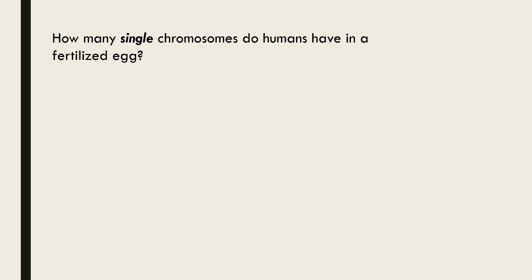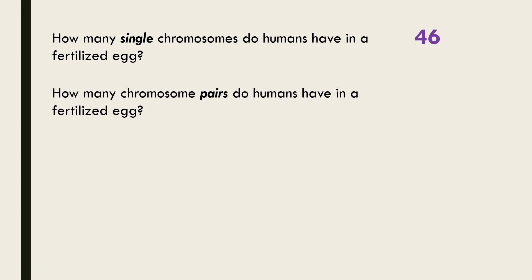Fertilization involves the fusion of the genetic material from the two gametes — a sperm and egg cell. So how many single chromosomes will a human fertilized egg contain? 46. The fertilized egg has received a copy of each chromosome from both the egg and sperm cells so the diploid number has been restored. Therefore the fertilized egg has 23 chromosome pairs.